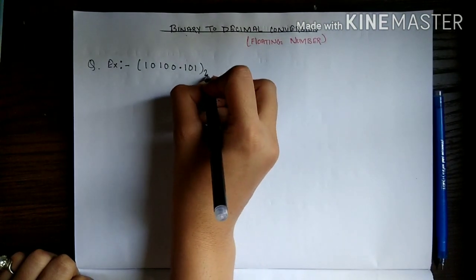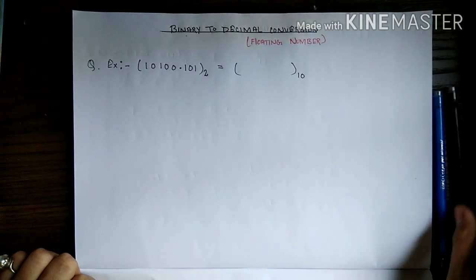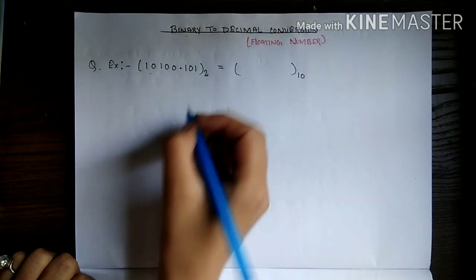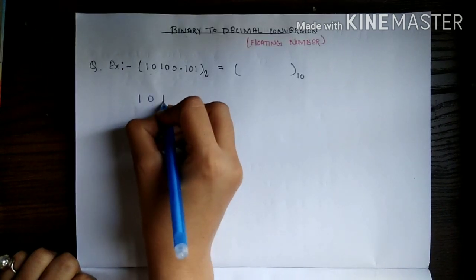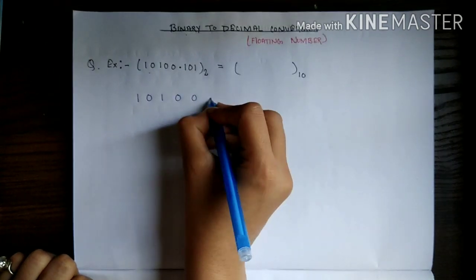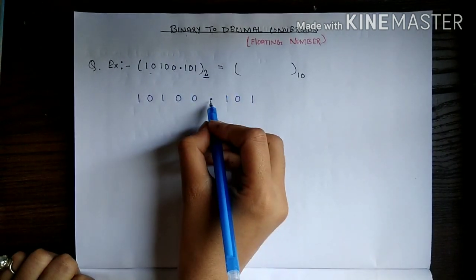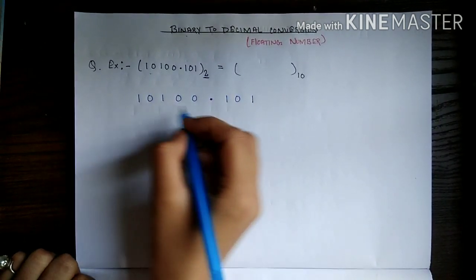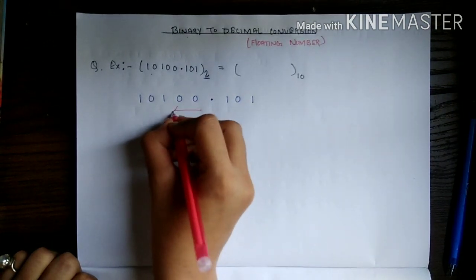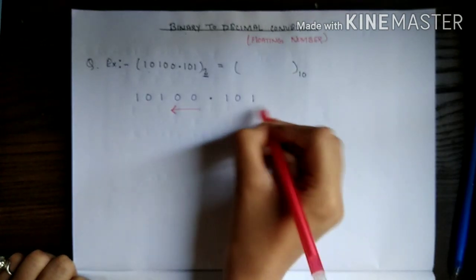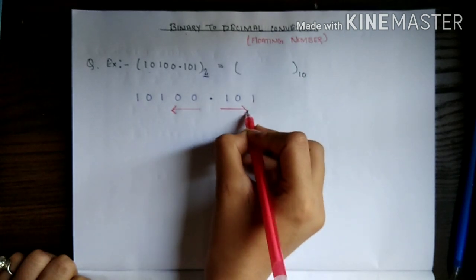Its base is 2 and we have to convert it to base 10. So what we do first is write this number: 1 0 1 0 0 point. As its base is 2, on the left side of the point we increase the power, and on the right side of the point we decrease the power.